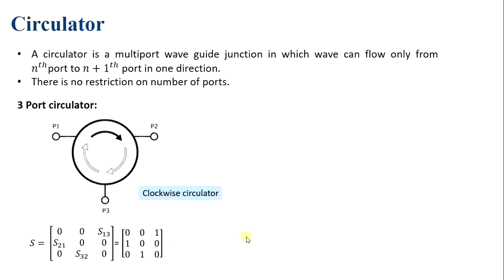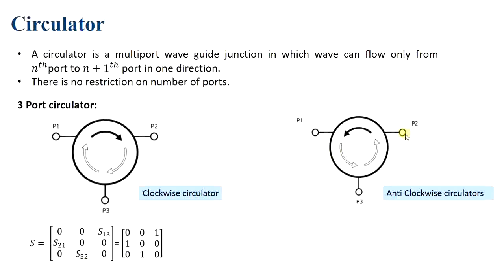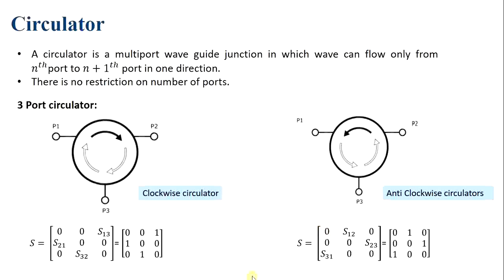For the anticlockwise circulator, the signal rotates in the anticlockwise direction: if signal is at port 1, output appears only at port 3; if signal is at port 3, output appears only at port 2; if signal is at port 2, output appears only at port 1. For the S-matrix: S12 = 1, S31 = 1, and S23 = 1. This is the S-matrix of the anticlockwise circulator.